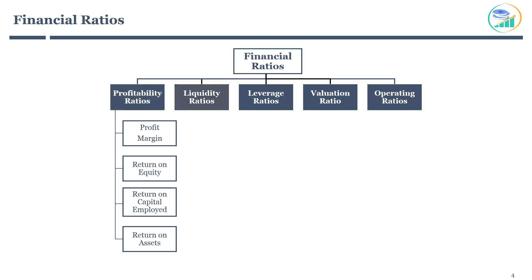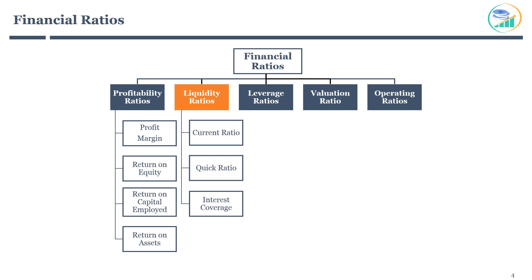The next financial ratio category is liquidity. It is used to determine a company's ability to pay off current debt obligations without raising additional capital. In short, it determines the company's ability to cover short-term financial obligations. There are three main liquidity ratios: current ratio, quick ratio, and interest coverage.